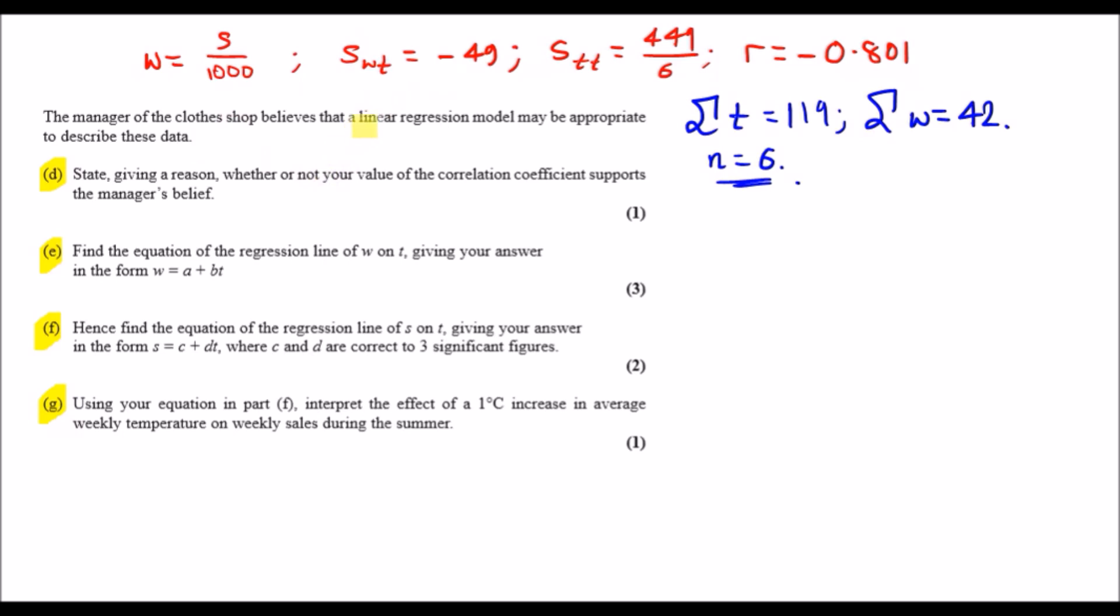Now part D: state, giving a reason, whether or not your value of the correlation coefficient (i.e., the R value we obtained here) supports this manager's belief. Well, according to the manager, he believes that a linear regression model may be appropriate to describe this data.